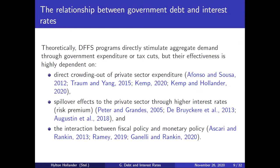Theoretically, DFFS programs directly stimulate aggregate demand through government expenditure or tax cuts, but their effectiveness is highly dependent on a number of things. Three are directly related from the literature to the modeling environment: first, it can directly crowd out private sector expenditure; second, there are spillover effects to the private sector through higher interest rates, particularly through the risk premium; and third, it's highly dependent on the interaction between fiscal and monetary policy, which tends to be more indirect.